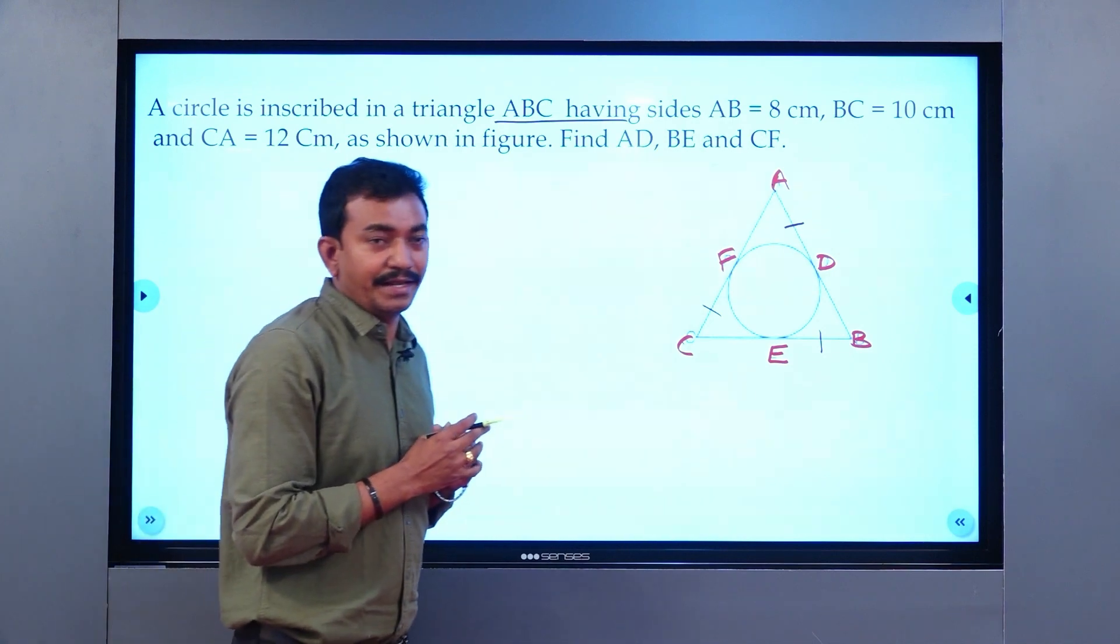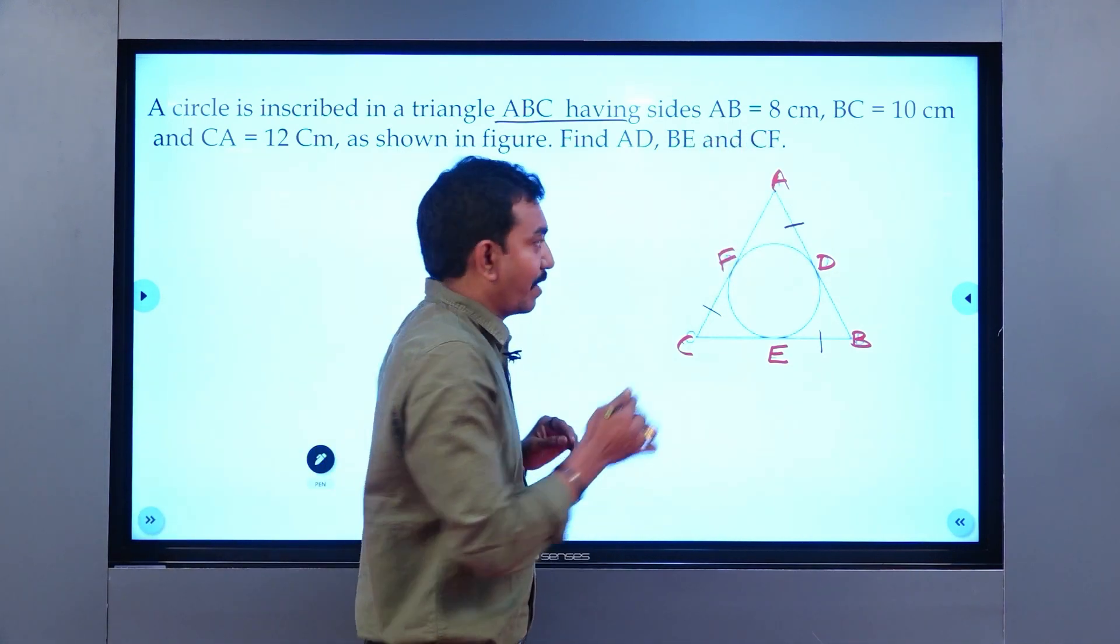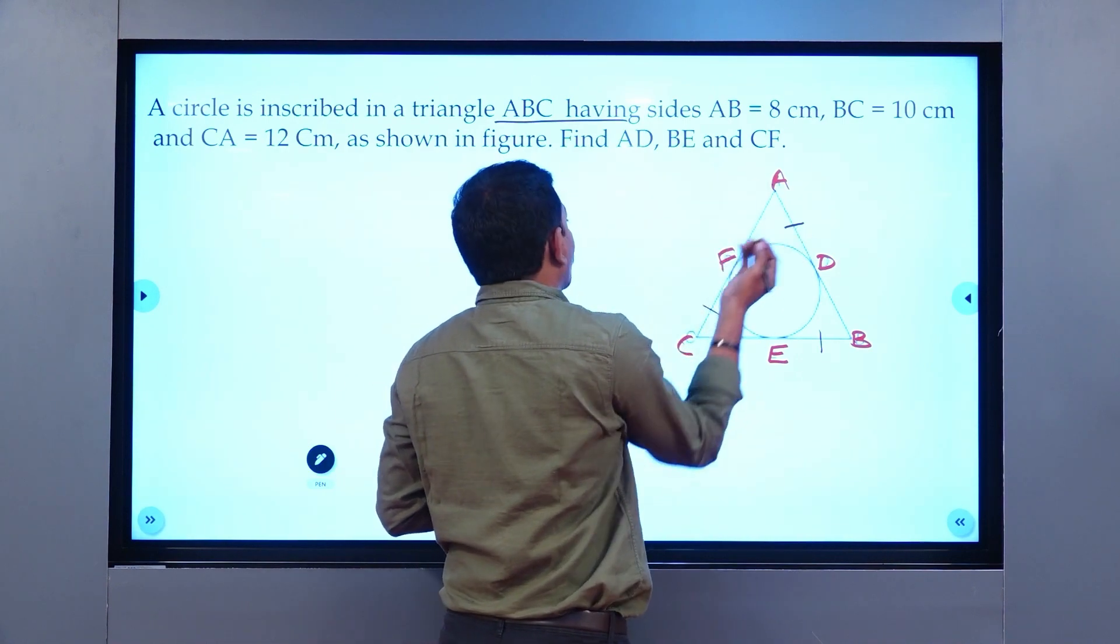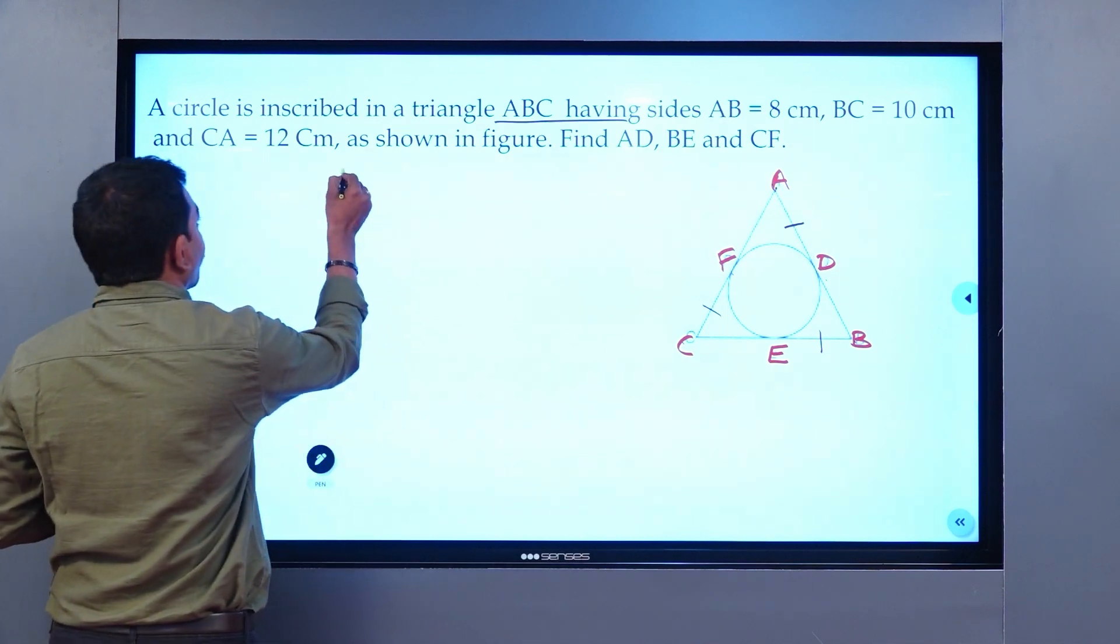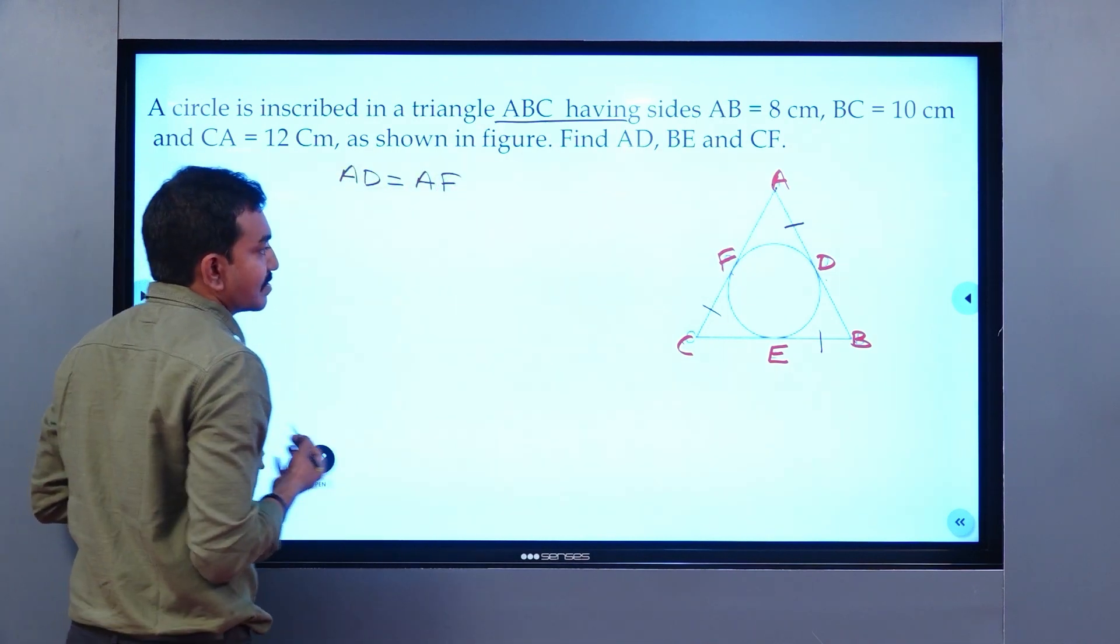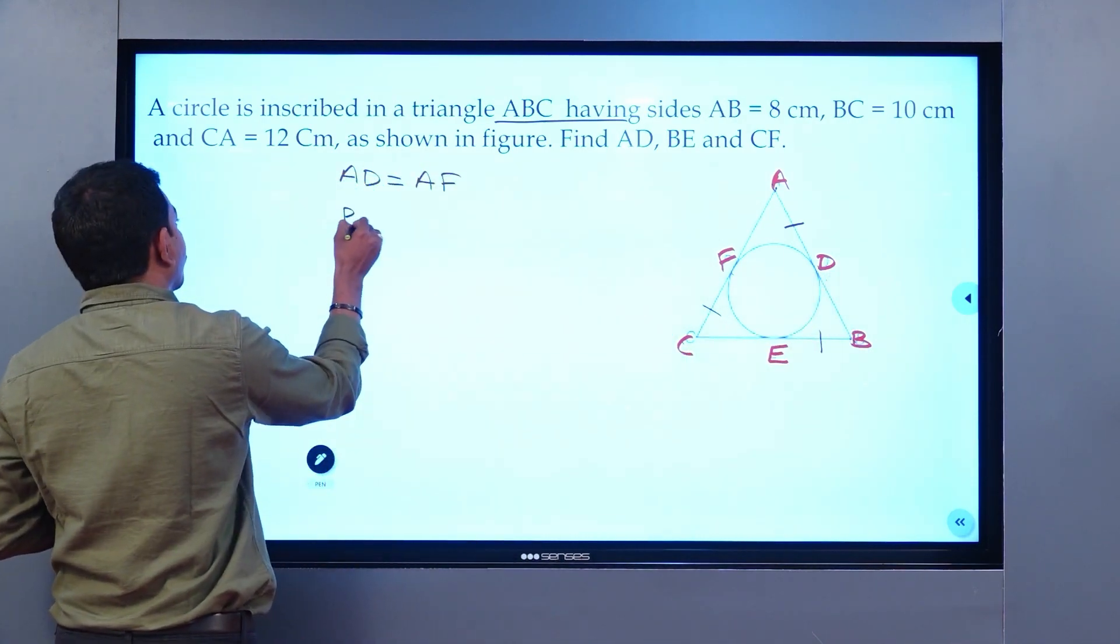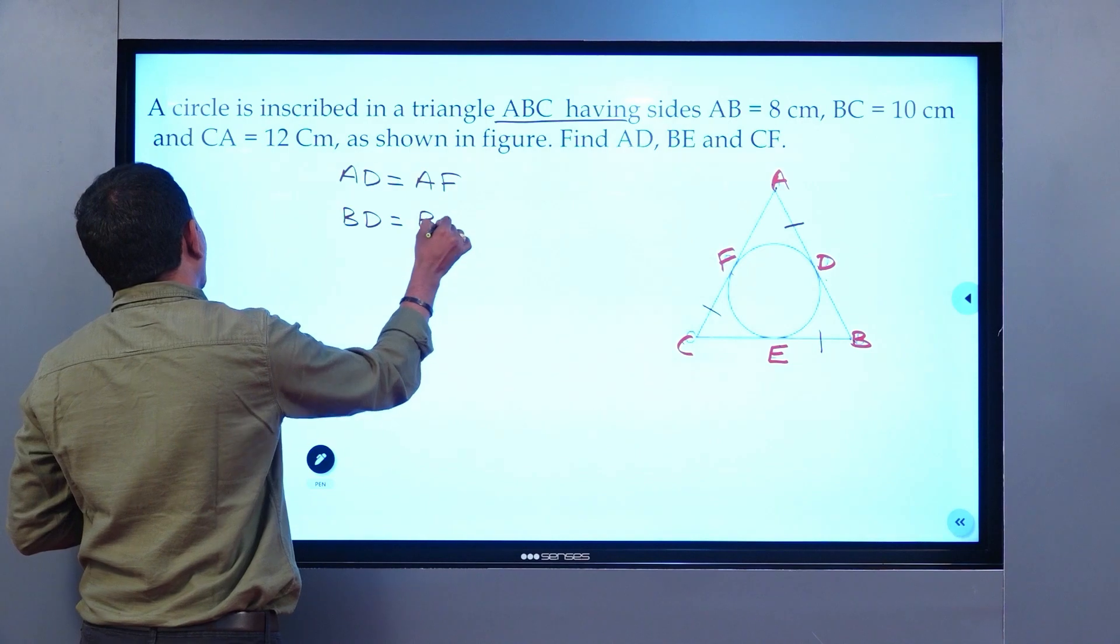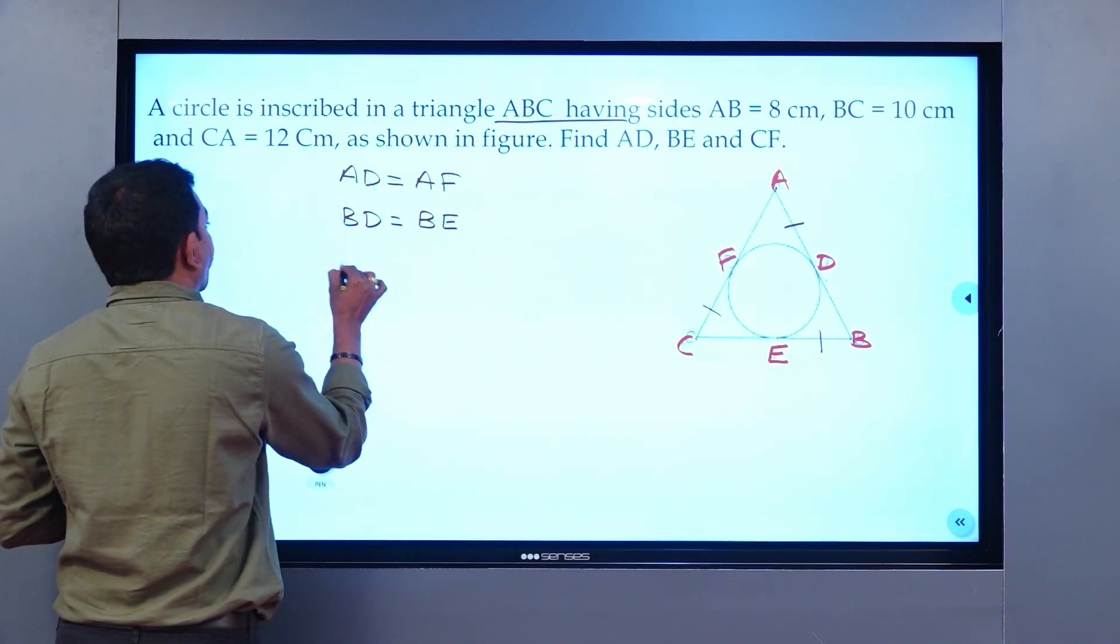We have a property where tangents drawn to the circle from the same external point are equal in length. We can say AD and AF are equal. Similarly, BD and BE are the same, and CE and CF are the same.